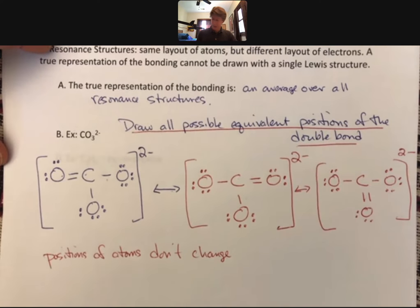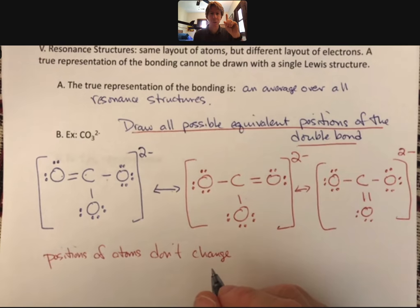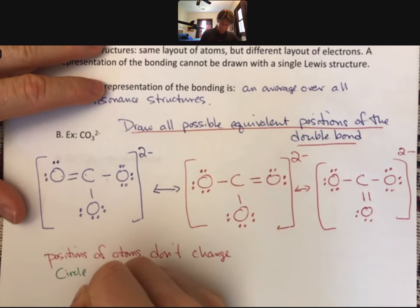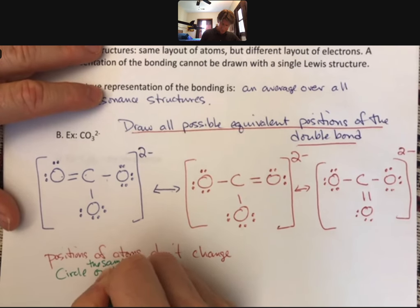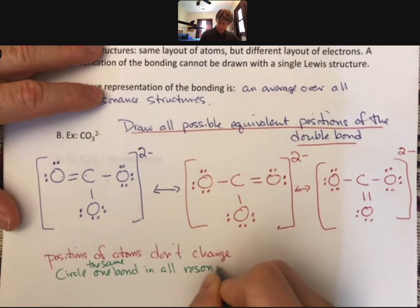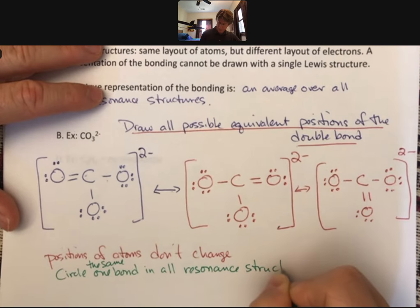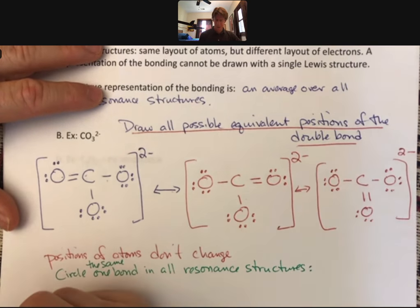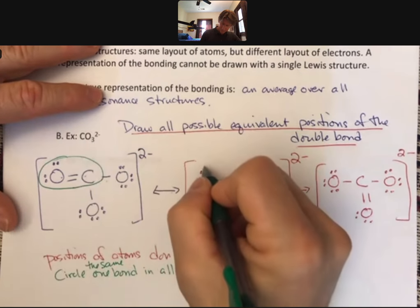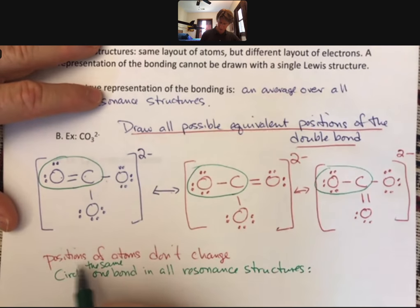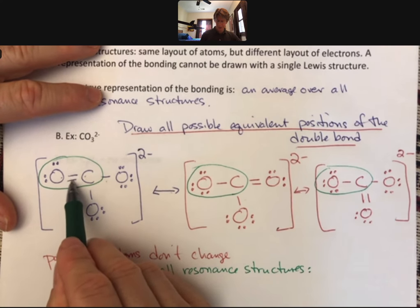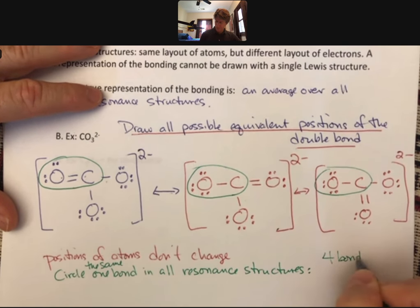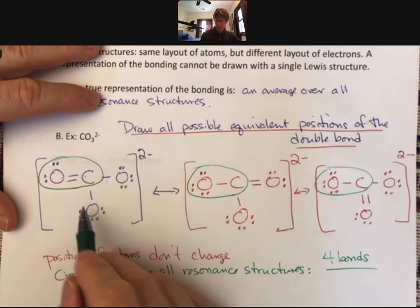Now, what does this mean? So if I circle one bond in all my resonance structures, circle one bond, or circle the same bond in all resonance structures. So I'm going to circle this one right here. And that's another reason why it's important that the position of your atoms don't change. You'll note that I have circled one, two, three, four bonds. And there are only three resonance structures.